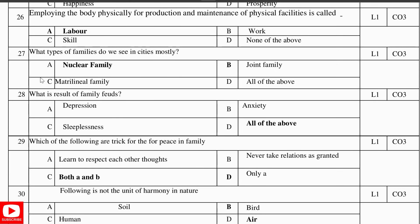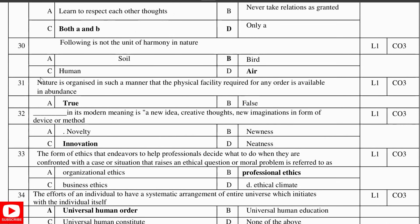What is the result of family feuds? It is all of that — depression, anxiety, and sleeplessness. What are the tricks for peace in the family? Learn to respect each other's thoughts and never take relations for granted. The following is not a unit of harmony in nature: air. Nature is organized in such a manner that physical facilities required for any order are available in abundance — true. Innovation in its modern meaning is a new idea, creative thoughts, new imaginations in the form of a device or method.